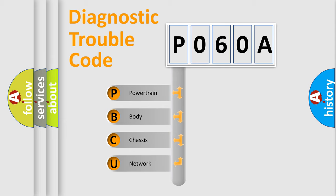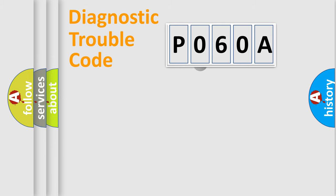We divide the electric system of automobile into four basic units: Powertrain, Body, Chassis, and Network. This distribution is defined in the first character code.